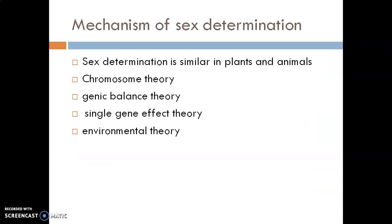In unicellular eukaryotes, there are very simple mechanisms of sex determination — two alleles of a single gene determine the sex. In multicellular organisms, the strategy to produce male and female gametes differs from unicellular eukaryotes. In many plant and animal species that are hermaphrodites, they may be bisexual throughout their life and sometimes change from one sex to another. These are all very interesting aspects of sex determination.